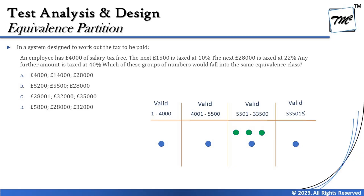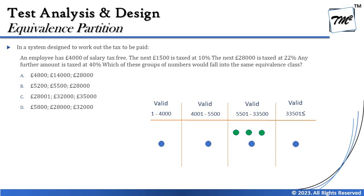The question asks: which group of numbers would fall into the same equivalence class? Create the table first, then check which option has all values in the same class. Option A has 4,800 in the second class and 14,000 in the third — distributed, so incorrect. Option B has 5,200 and 5,500 in the second class but 28,000 in the third — distributed. Option C has 2,800 and 32,000 in the third class but 35,000 in the fourth.